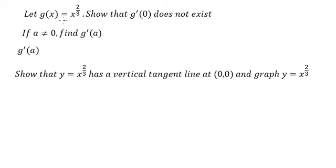Later we put the value of a in here. So the first derivative of g(s), we will have 2 over 3, s to the power of 2 over 3 minus 1. So we have 2 over 3, s to the power of negative 1 over 3.